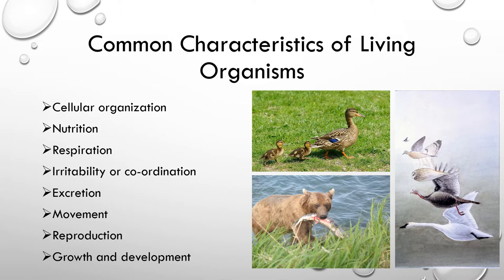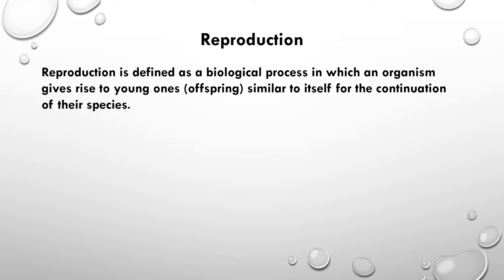Let's see what reproduction, growth, and development of organisms means in detail. Reproduction is the most important living characteristic that involves maintaining the continuity of life on Earth. The definition of reproduction is: it is a biological process in which an organism gives rise to young ones or new offspring similar to themselves, for the continuation of their species.